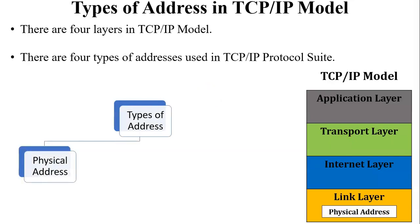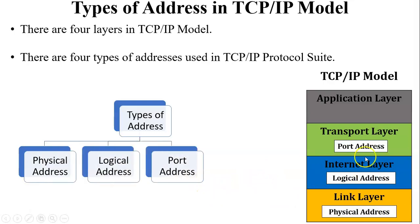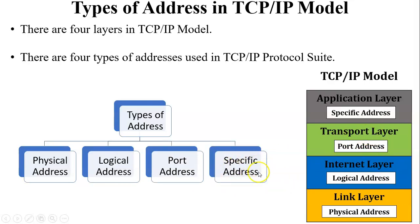The first one is the physical address, used at the link layer. The second one is the logical address, used at the internet layer. The third one is the port address, used at the transport layer, and the fourth one is the specific address, used at the application layer. In this video I am going to discuss about specific address at the application layer.